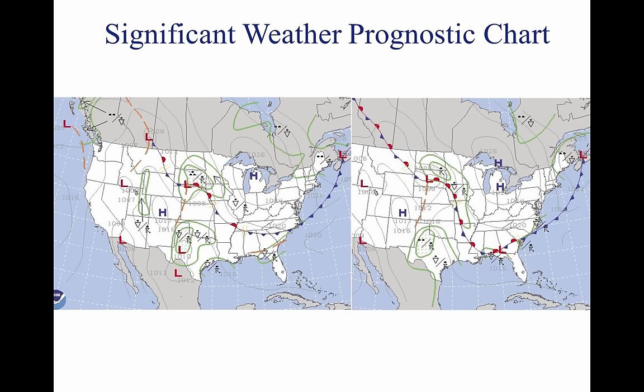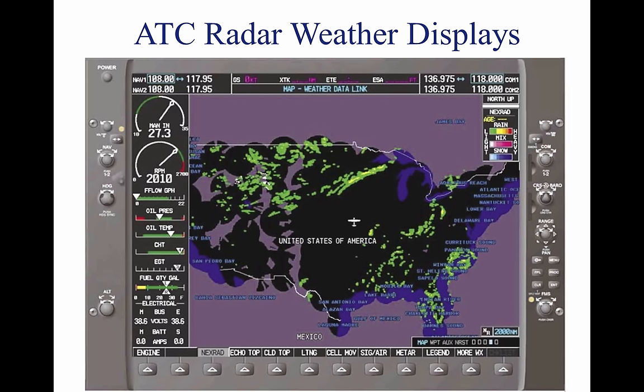The 36- and 48-hour significant weather prognostic chart is an extension of the 12- and 24-hour forecast. It provides information regarding surface weather forecasts and includes a discussion of the forecast. This chart is issued twice a day. It typically contains forecast positions and characteristics of pressure patterns, fronts, and precipitation.